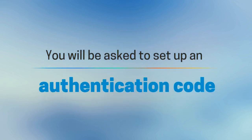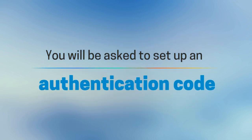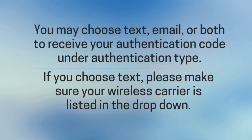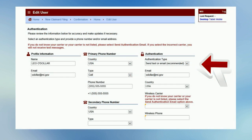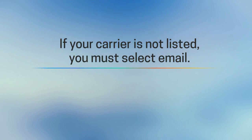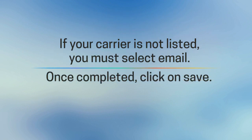You will be asked to set up an authentication code. You may choose text, email, or both to receive your authentication code under 'Authentication Type.' If you choose text, please make sure your wireless carrier is listed in the dropdown. If your carrier is not listed, you must select email. Once completed, click 'Save.'